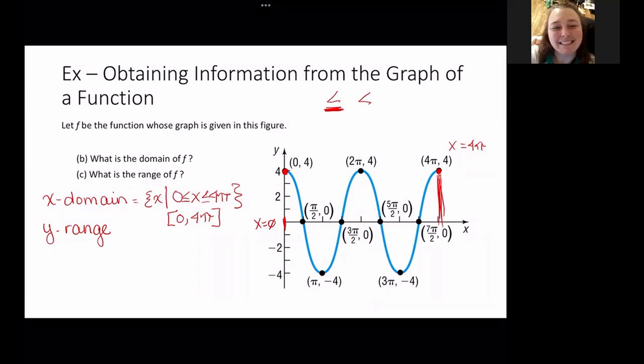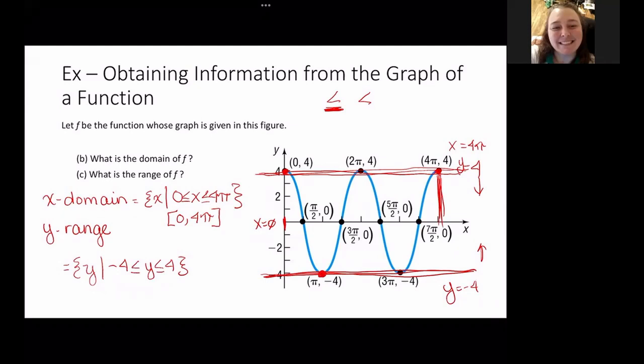Now the range. The range is going to be all y's such that, where my y is maxing out here, that's 4, and the minimum is down here. So y equals -4. My y is everything in between. It never goes outside of those. So I'm going to have from -4 to 4, closed dots, which means that they're inclusive.